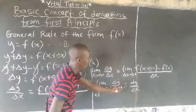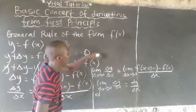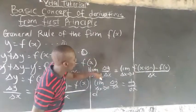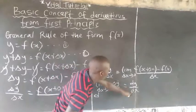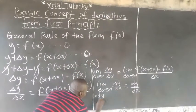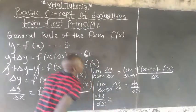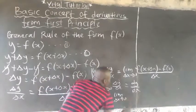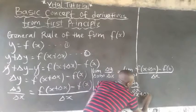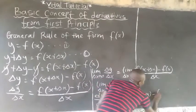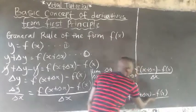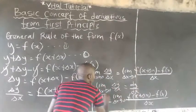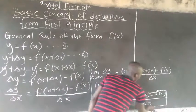So it will be dy/ds equals to the limit as change in s approaching zero of f(s plus change in s) minus f(s) everything over change in s. And here is the general rule, the general rule of first principles.